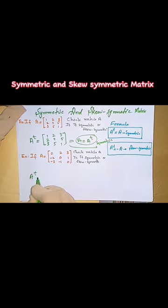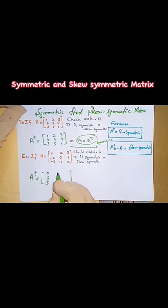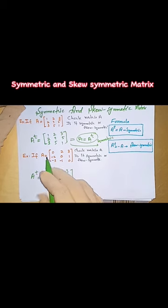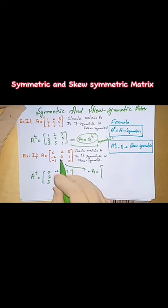In this example we need the A transpose. This is a row: zero, two, three. It becomes a column: zero, two, three. Similarly, minus two, zero, one. Now we find minus A, which equals multiplying minus by all the entries of the matrix.